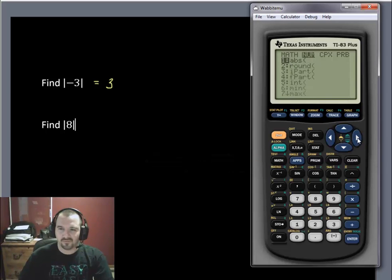And you scroll over to num, which stands for number. And this is where all of the stuff that you might want to use on numbers would go. And the very first one, ABS, stands for absolute value. So we're going to press enter to activate that.